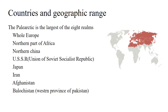Here you can see the geographic limits and countries included in this region. The Palearctic region is the largest of the 8 biogeographic realms. The countries included are the whole of Europe, northern part of Africa, northern China, USSR, Japan, Iran, Afghanistan, and Tajikistan.